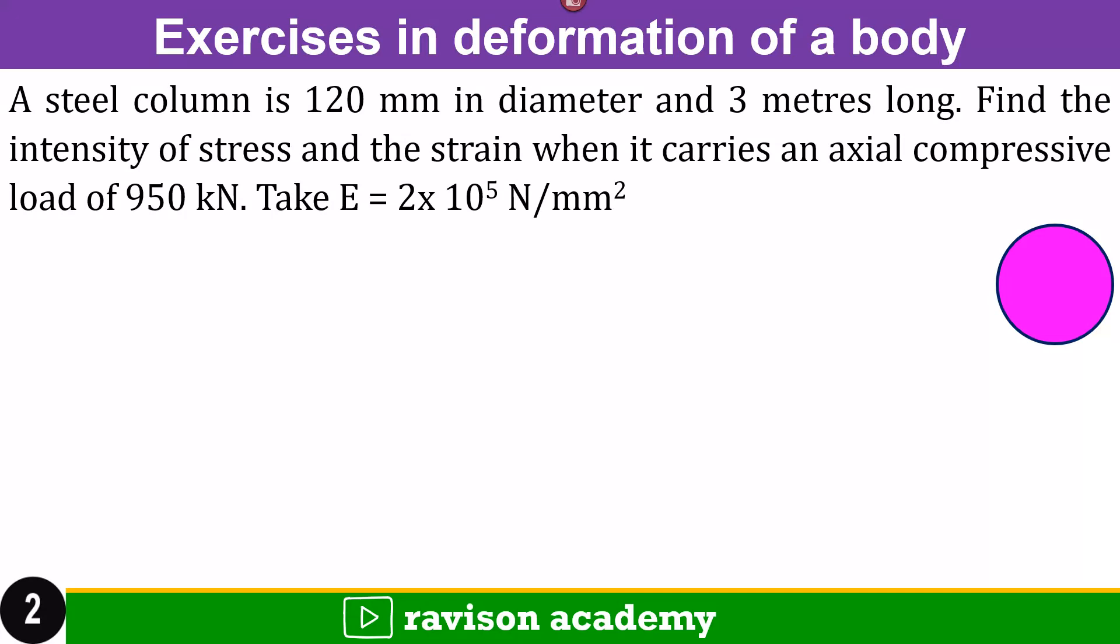A steel column of 120 mm diameter and 3 meters long. Find the intensity of the stress and the strain when it carries an axial compressive load of 950 kN. Take Young's modulus E as 2 into 10 power 5 Newton per mm square.